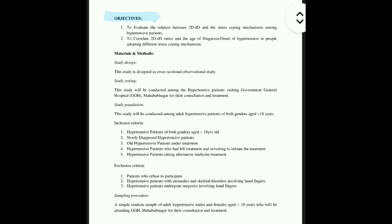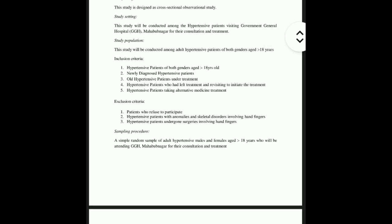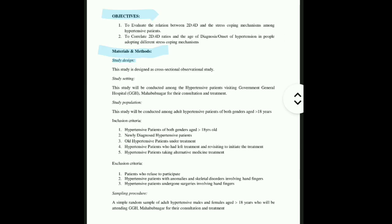After the objectives comes the methodology — materials and methods. You can copy and paste it exactly. Firstly, you have to write the study design. For most ICMR STS studies, the study design will be a cross-sectional observational study, because we are not going to experiment — we are just going to observe. Cross-sectional means we will take up the patient, interview them, and send them off. We are not going to follow them up.